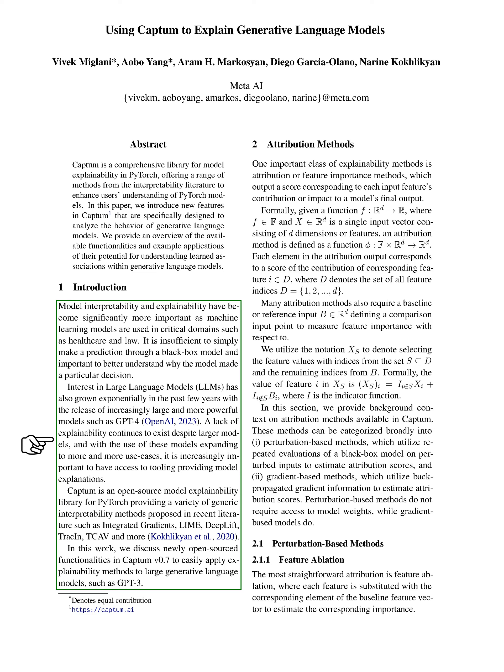We're going to talk about the importance of understanding how machine learning models make decisions, especially as they're being used in crucial areas like healthcare and law. It's not enough to just get a prediction from a model — we need to know why it made that decision. This is particularly true for large language models, LLMs, which have become increasingly popular with the introduction of more powerful models like GPT-4. Despite their size, these models still lack explainability, and as we use them in more situations, it's crucial that we have tools to help us understand them.